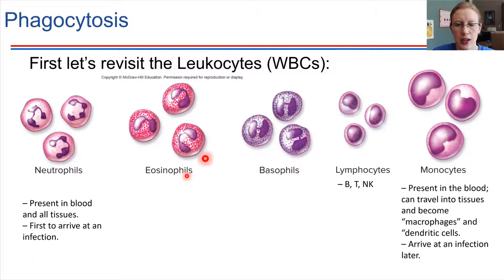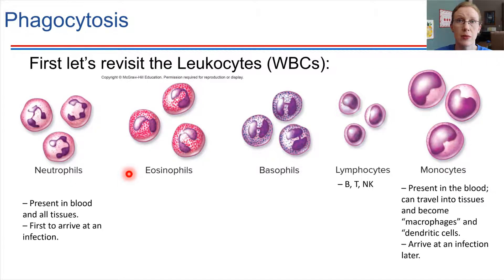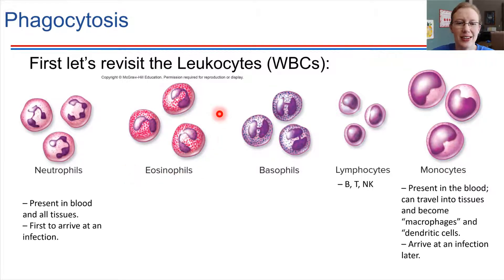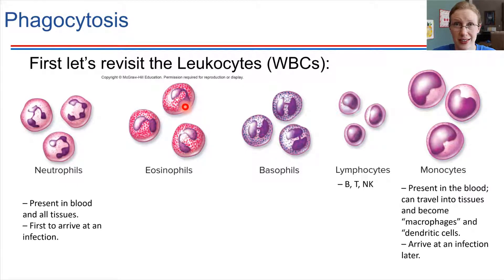The eosinophils — sometimes these are present just in very low numbers. Oftentimes they are not needed in the body. But if there is a parasitic infection, like for example tapeworm, then the eosinophils' numbers are going to come up and they are going to work to address that issue. So these are primarily for dealing with parasites.